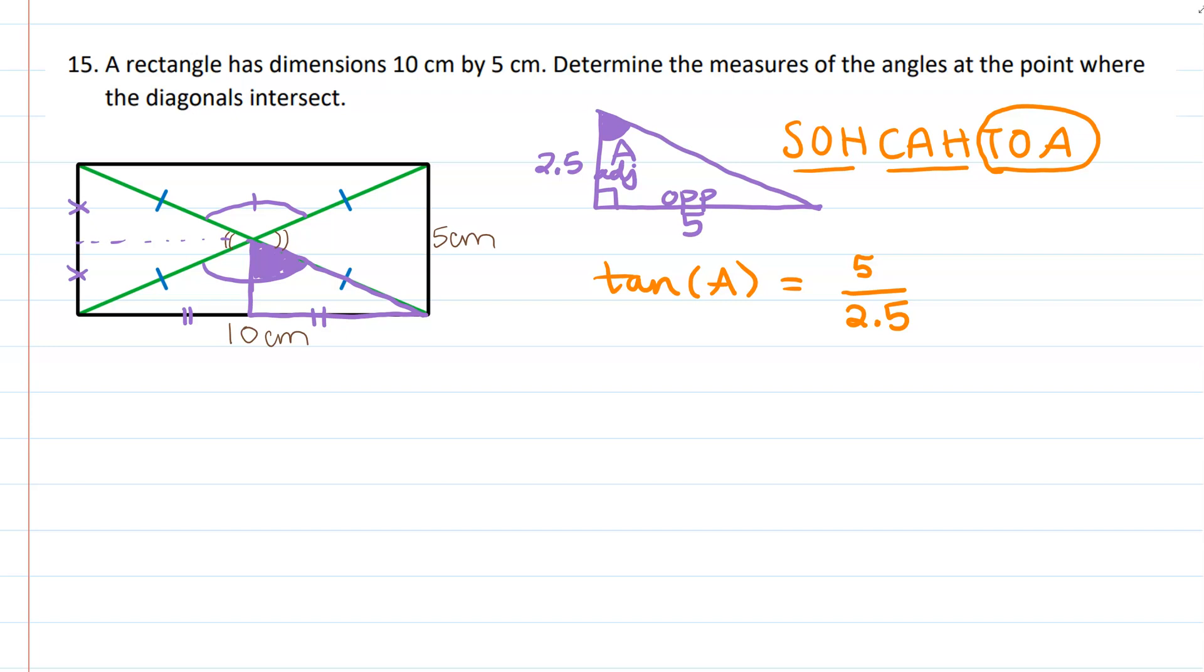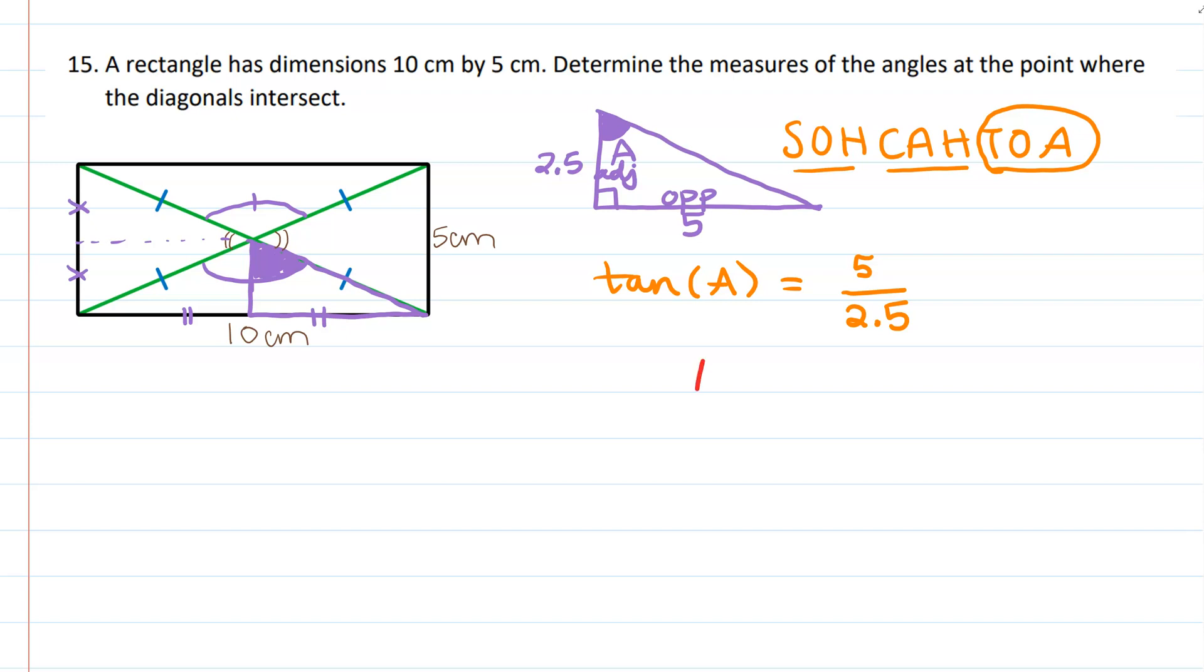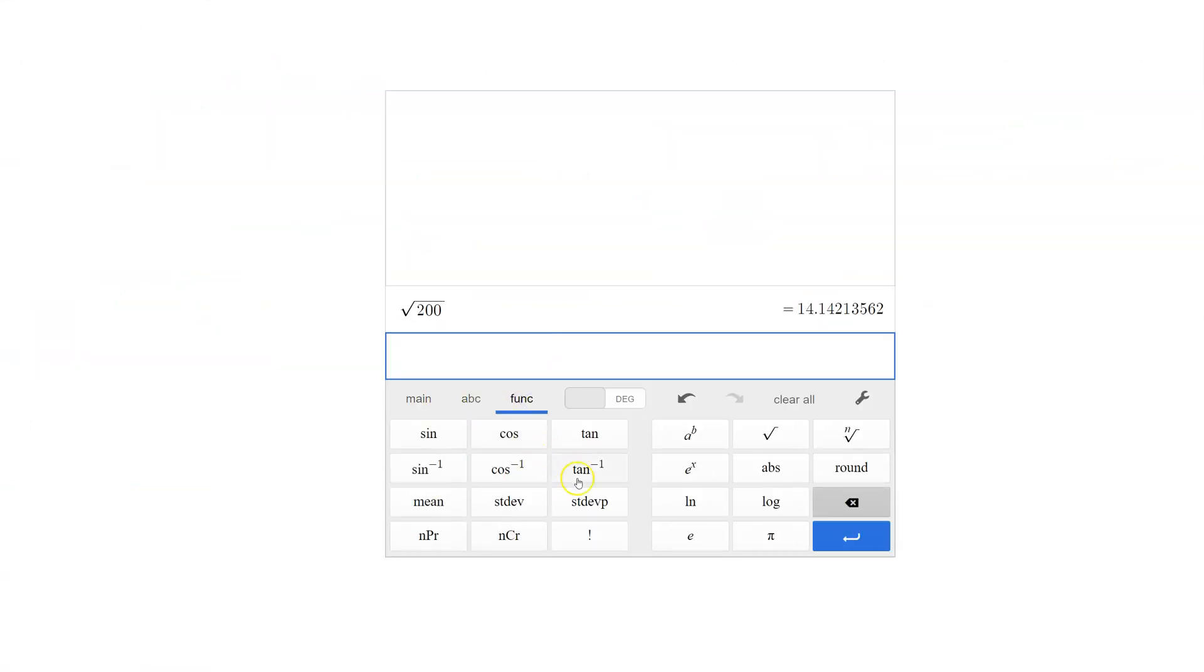Now how do we undo tangent? Well, we undo tangent by taking the inverse tangent. So angle A would be inverse tangent of 5 over 2.5. And all we got to do now is just go to the calculator and make sure we are in degrees. So let's go over to our calculator, and I like to use my decimal calculator. And we would go to function and then inverse tangent of 5 divided by 2.5, just the way that looks right there. And we should get the answer of 63.43, or 63.4 roughly.